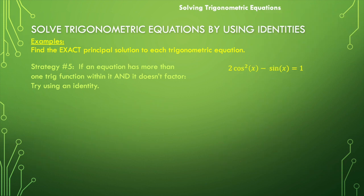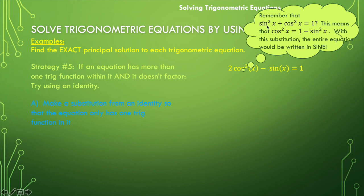Let's try another example. I have two cosine squared of x minus sine of x equals one. I have sine and cosine here, but I have a cosine squared function. So I'm going to use a Pythagorean identity to get rid of it. Sine squared of x plus cosine squared of x is equal to one, which means cosine squared of x is equal to one minus sine squared of x. Let's substitute that expression into the equation where I see cosine squared of x.